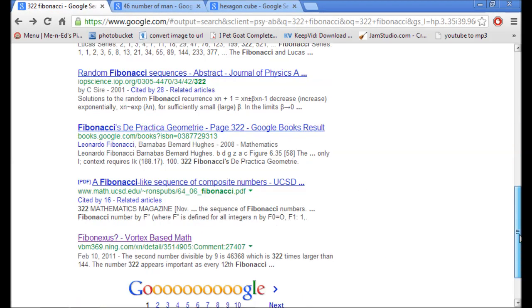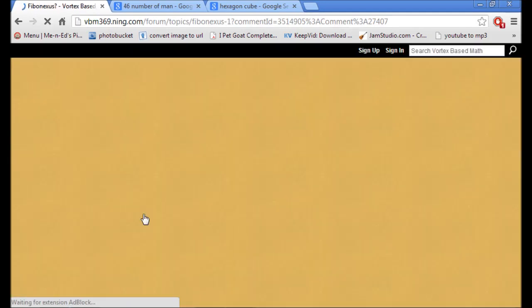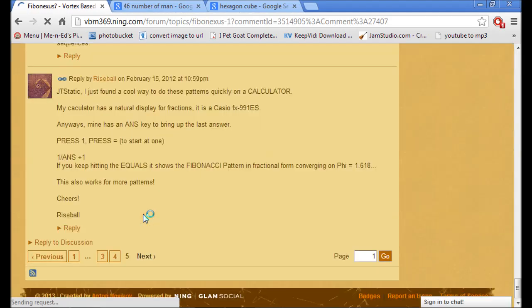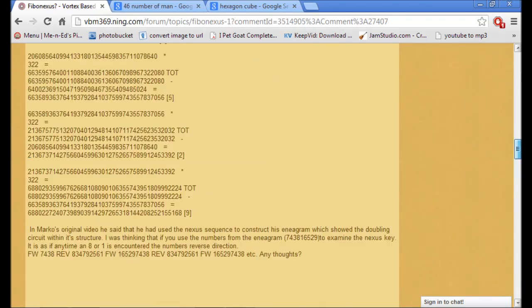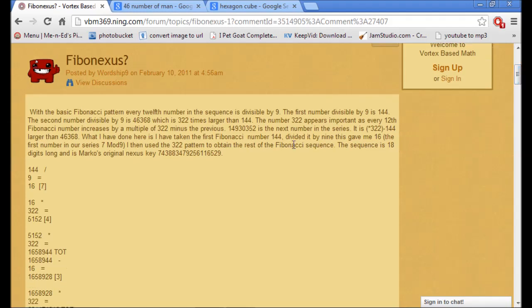Now here's some more mathematical information for you demonstrating further what in fact 322 represents. The Fibonacci pattern - every twelfth number in the sequence is divisible by nine. The first number divisible by nine is 144. 144 is another number in the Bible. 322 is involved in all of these mathematical calculations.